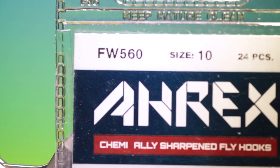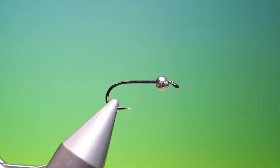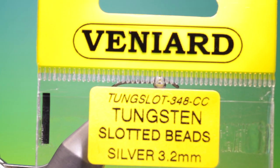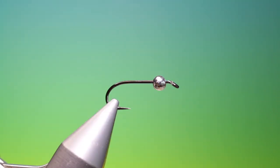We'll start with an RX FW 560 traditional nymph size 10 and a slotted tungsten 3.2mm silver bead. So this is the Lightning Bug, apparently one of the best sold flies in the United States.